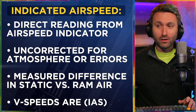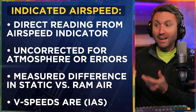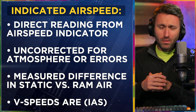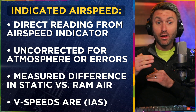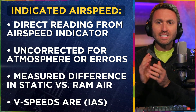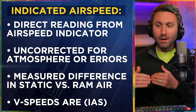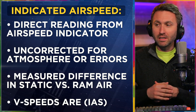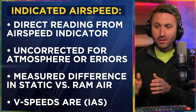Let's jump right into indicated airspeed. This is a direct reading from the airspeed indicator — as simple as it gets. Like if you're driving a car, that's how fast you're going. It's a little different here as we move an airplane through a volume and mass of air, but it's the direct reading from the airspeed indicator, uncorrected for atmosphere or installation errors. That's what the other airspeeds are all about. Indicated airspeed is measured as the difference between static air and ram air pressure — the static port on your airplane versus the pitot tube.